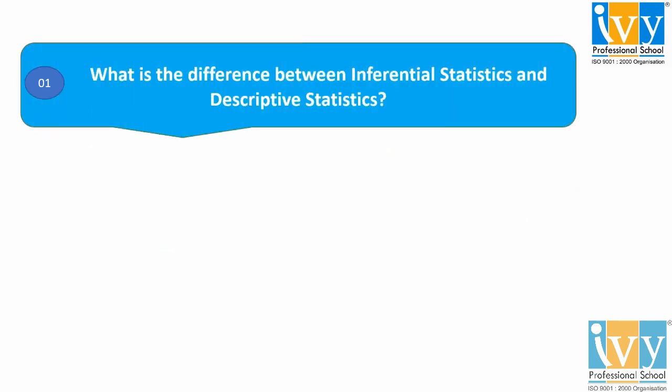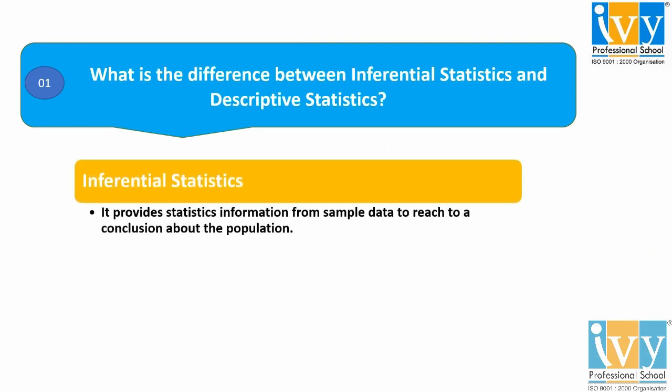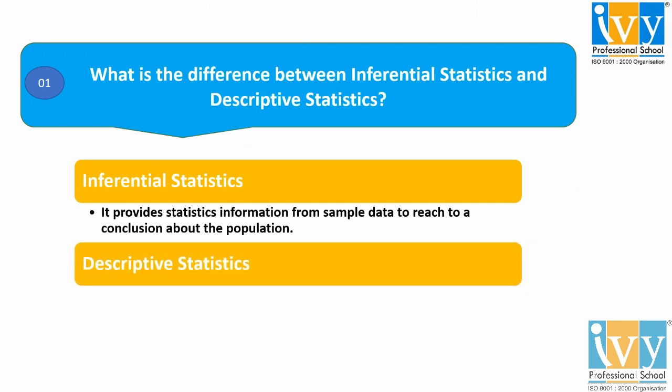Question 1: What is the difference between inferential statistics and descriptive statistics? Inferential statistics provides statistical information from the sample data to reach a conclusion about the population, whereas descriptive statistics provides exact and accurate information. In other words, inferential statistics allows us to test a hypothesis or assess whether our data is generalizable to the broader population, and descriptive statistics summarizes the characteristics of a data set.